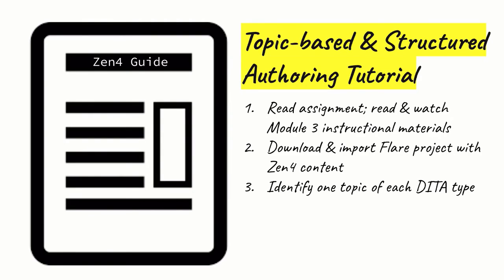Remember that Flare automatically created a topic file from any chunk of content between first-level headings in those FrameMaker files. That means an automatically created topic file might be either too big or too small to work well. You have the freedom to combine or split content however you must in order to create one high-quality example topic for each of the three types: a task, a reference, and a concept.